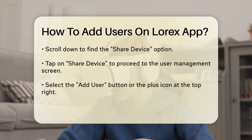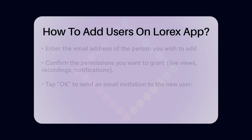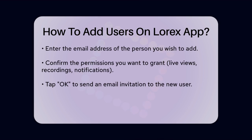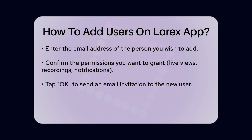After entering the email address, you'll get a prompt asking you to confirm the permissions you want to grant this user. You can choose whether they can see live views, access recordings, or receive notifications. Once you've set the permissions, tap OK to continue.